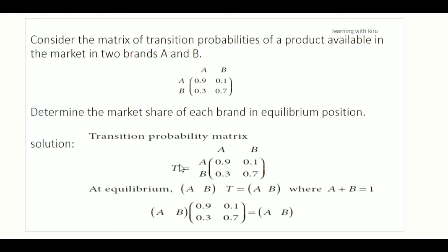We have to denote the transition probability matrices. On the bracket is A and B. In the formula we have to do all the sums. The probability must justify equal to 1. So A plus B is equal to 1 — if we add the A and B values, it will be equal to 1.